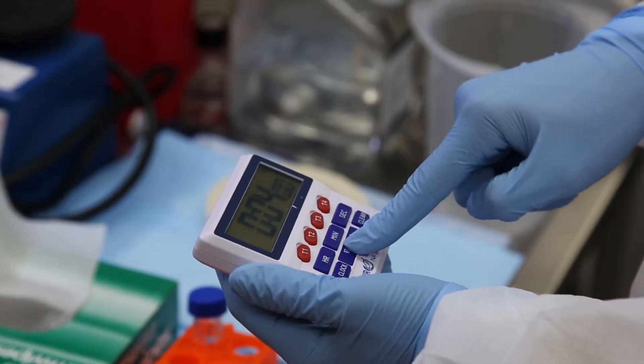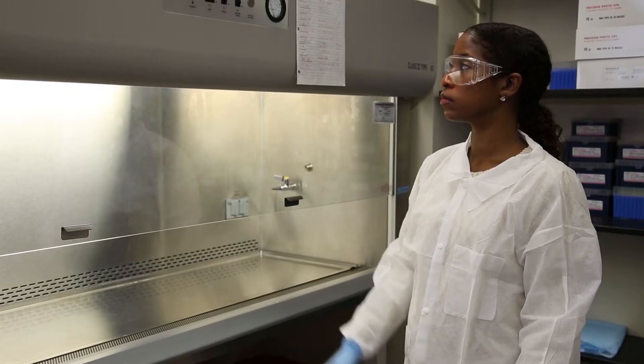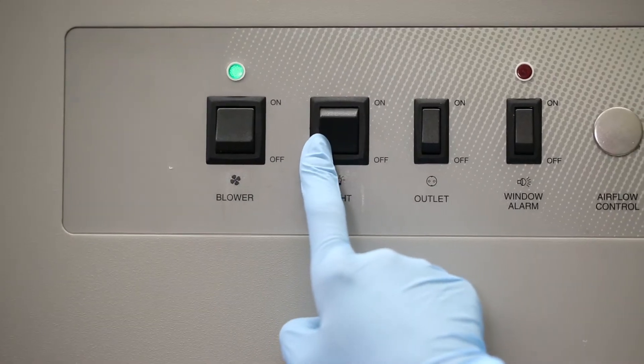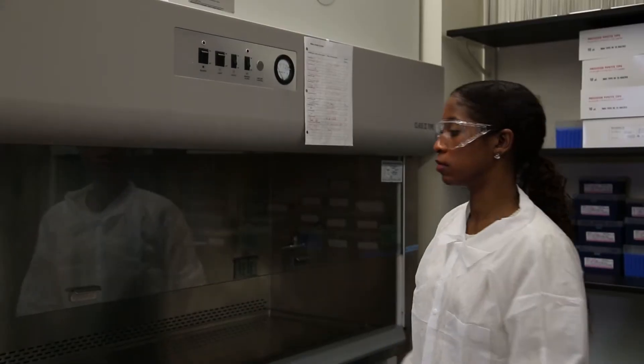Leave the blower motor running for at least four more minutes to purge the air. After four minutes, turn off the lights and blower and close the sash.